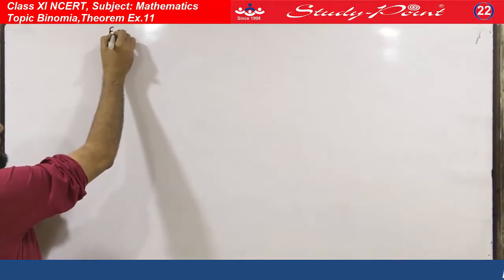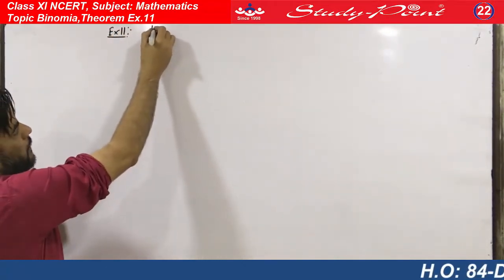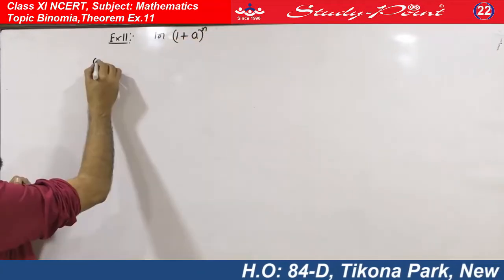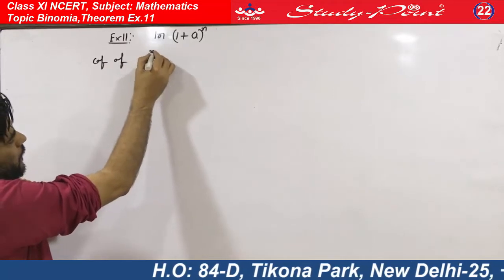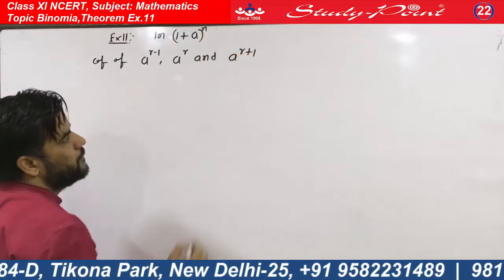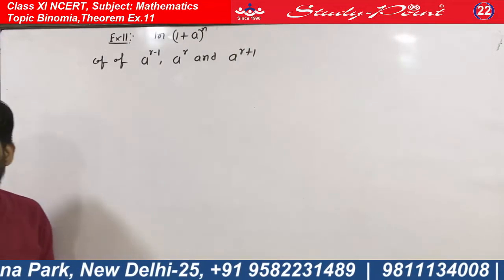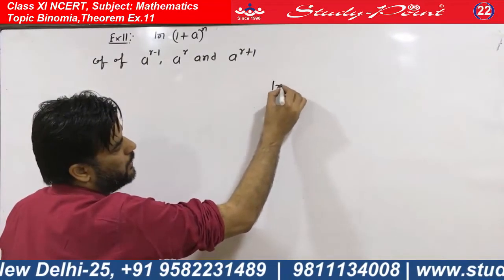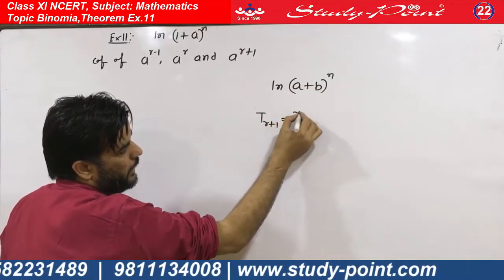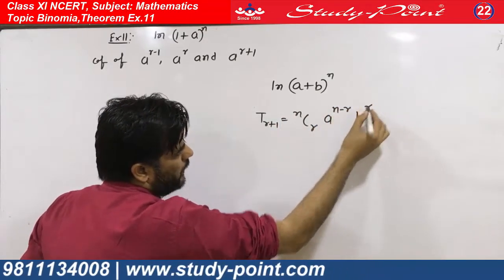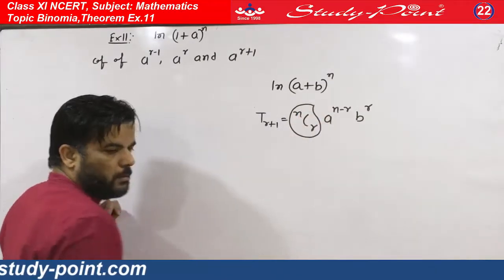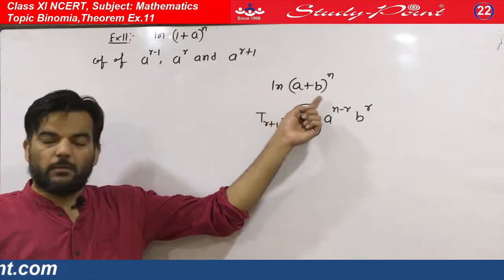Let's get example number 11. In (1+x) to the power n, the important part is finding the coefficient of a to the power r minus 1, a to the power r, and a to the power r plus 1. I have to write a coefficient using the general term. In (a+b) to the power n, our general term is nCr times a to the power n minus r times b to the power r.